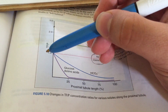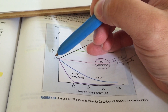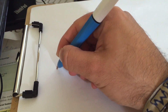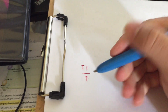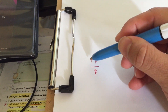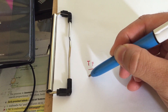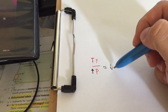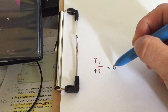The first thing we need to understand is this graph, which shows the tubular fluid to plasma concentration — a ratio of the substances inside the tubule to the plasma concentration. So if we increase plasma concentration, this whole ratio is going to go down. This is inversely proportional: if we increase plasma concentration, the ratio goes down.